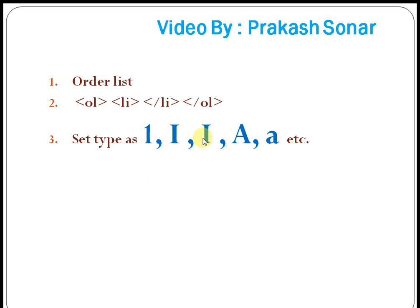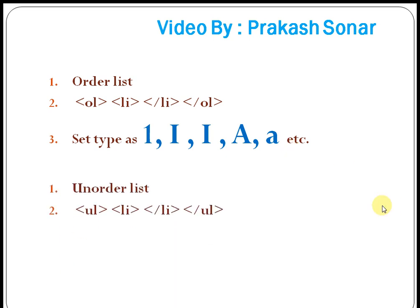Similarly, another type of list is an unordered list. Instead of ol, just replace with ul and it uses list items. You can set a type for an unordered list as disk, square, circle, or none. In this way, we can create a list.